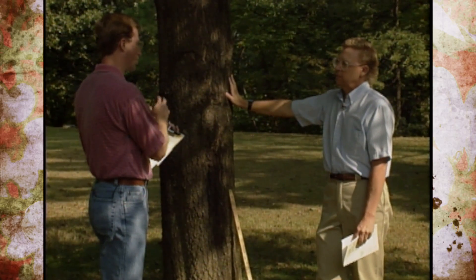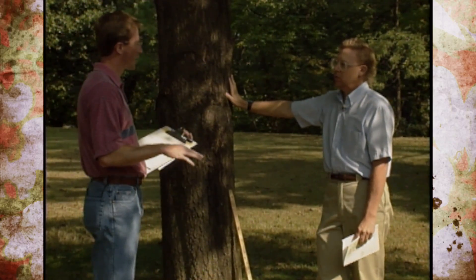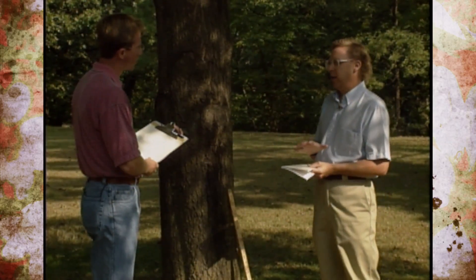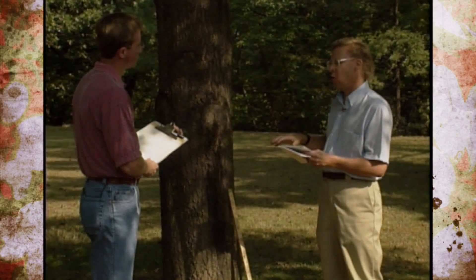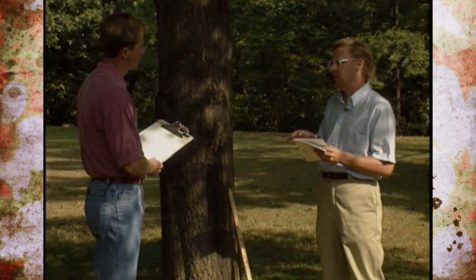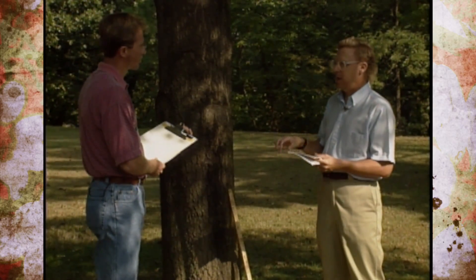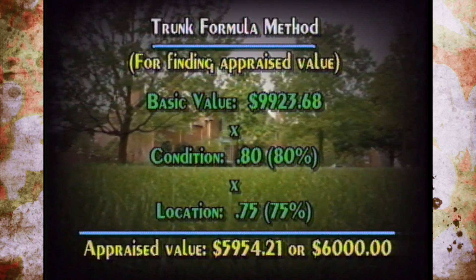That number is then multiplied by a number for location, which you gave a 0.75. Now, in a park setting like here in Stillwater, what are you looking at for location? Location looks at three factors: one is the site, referring to the general setting of the tree; also the contribution the tree makes to that particular landscape; and then the placement of that tree within that particular site. That number was 0.75. So all of those numbers multiplied out, we came up with an appraised value of $5,954.21 — and rounding off, we estimate about $6,000.